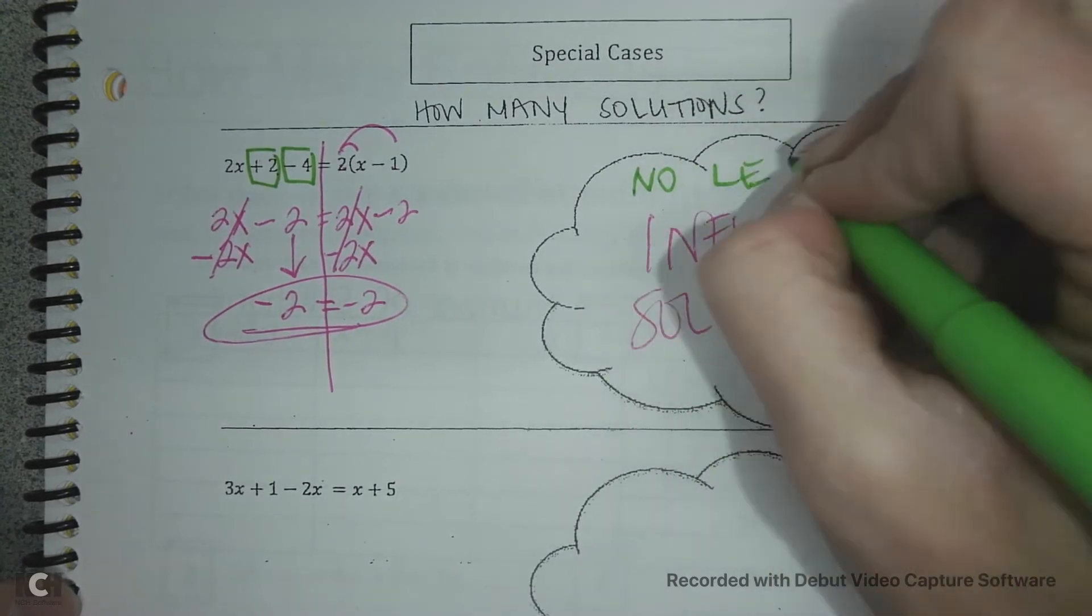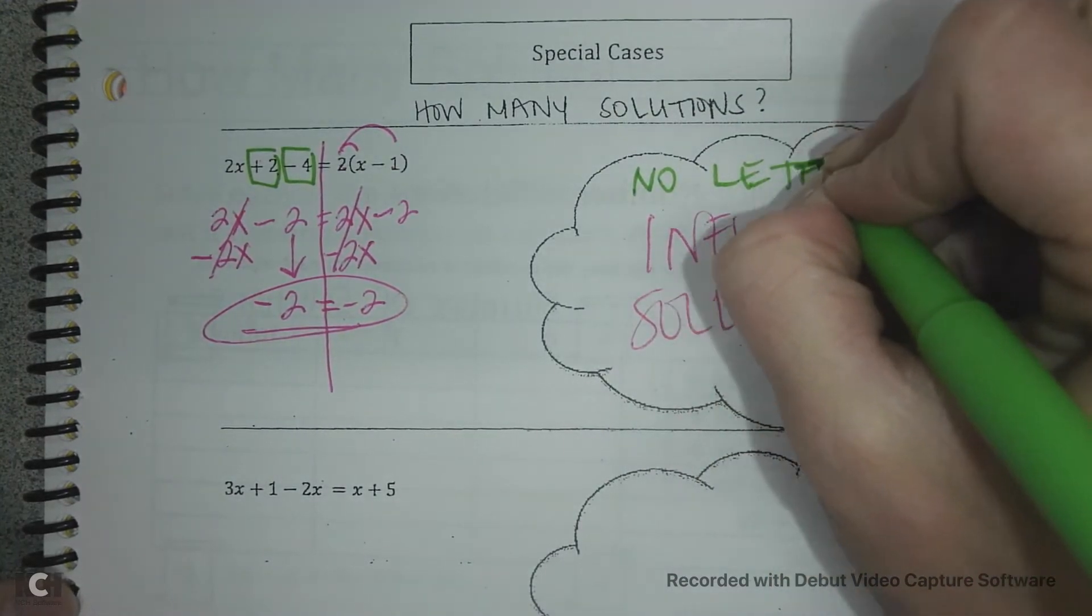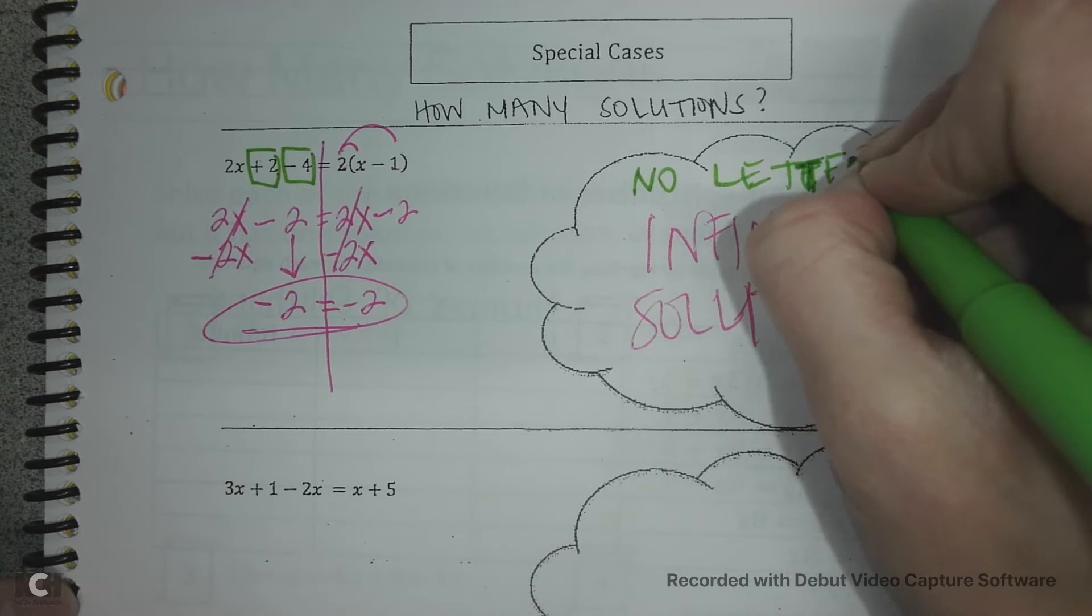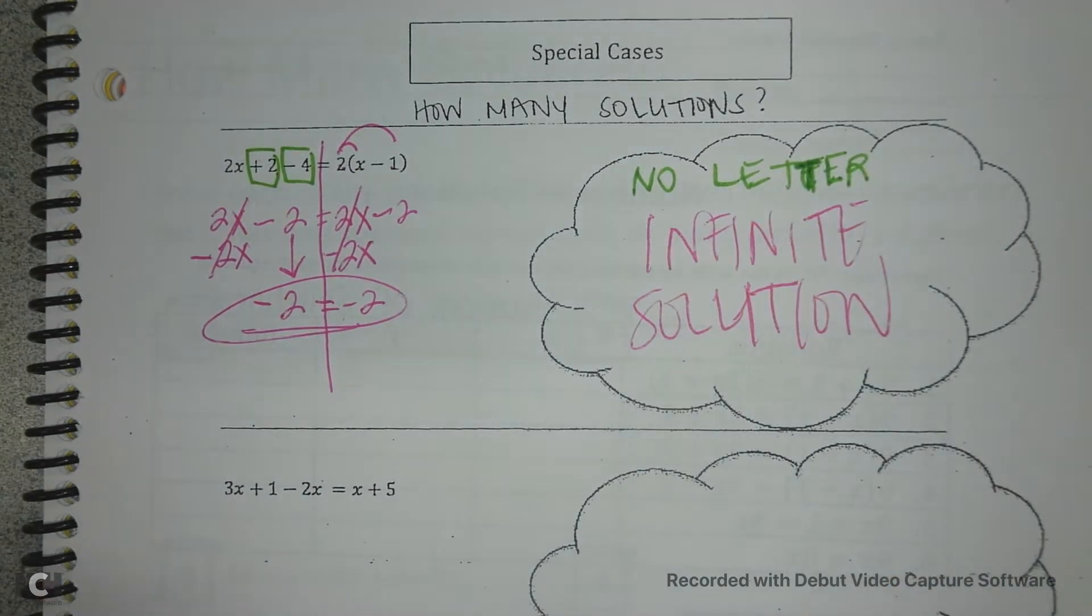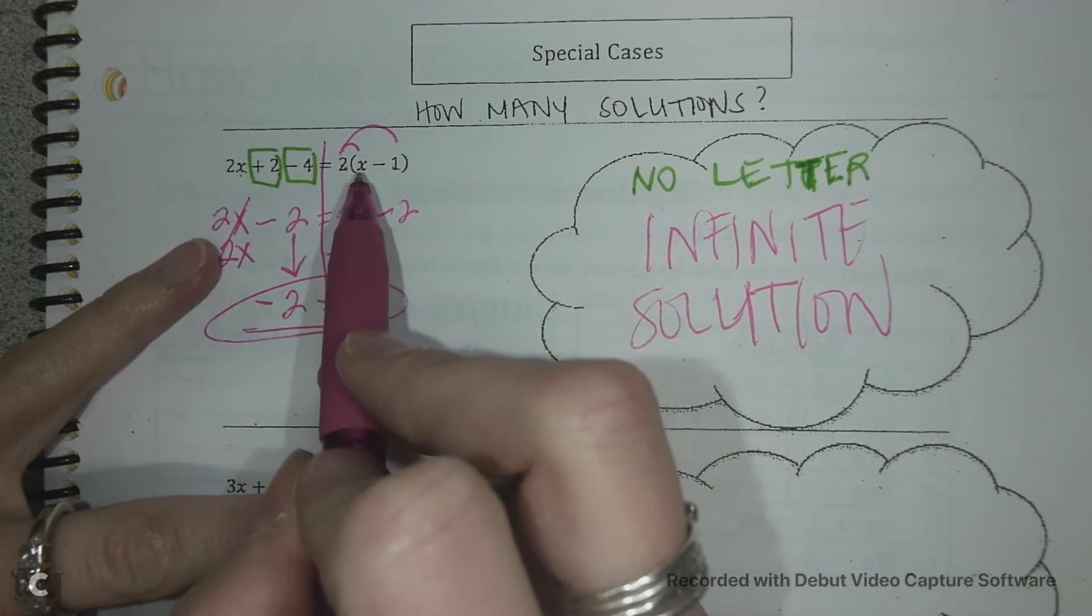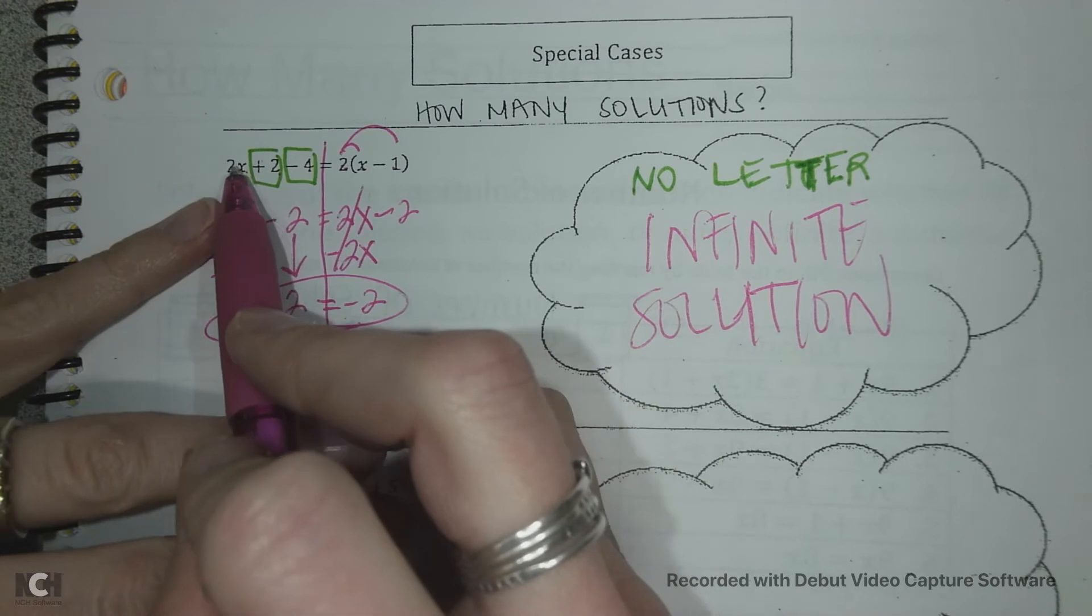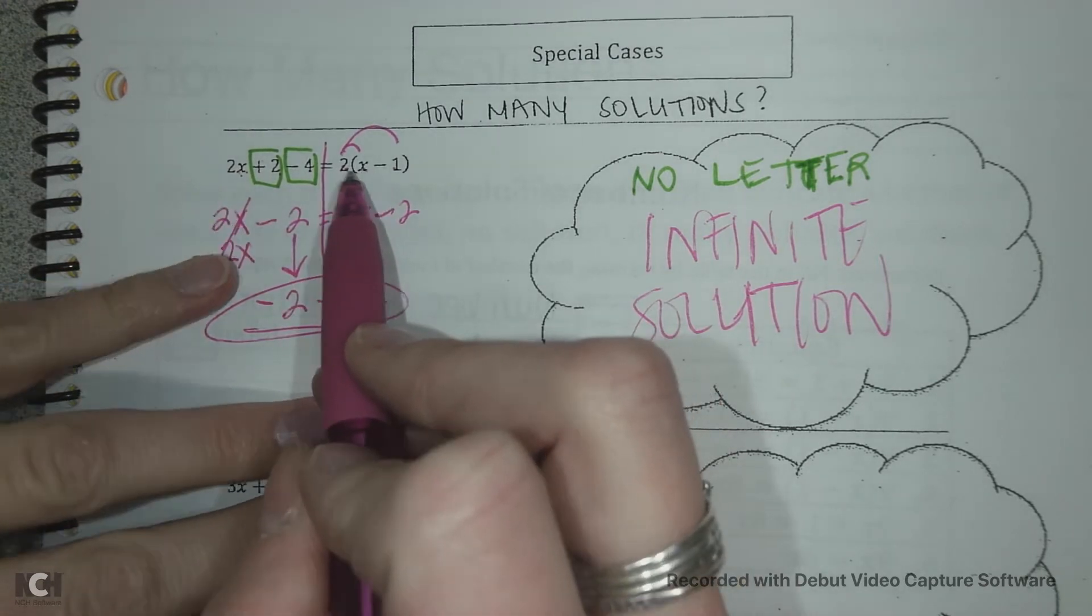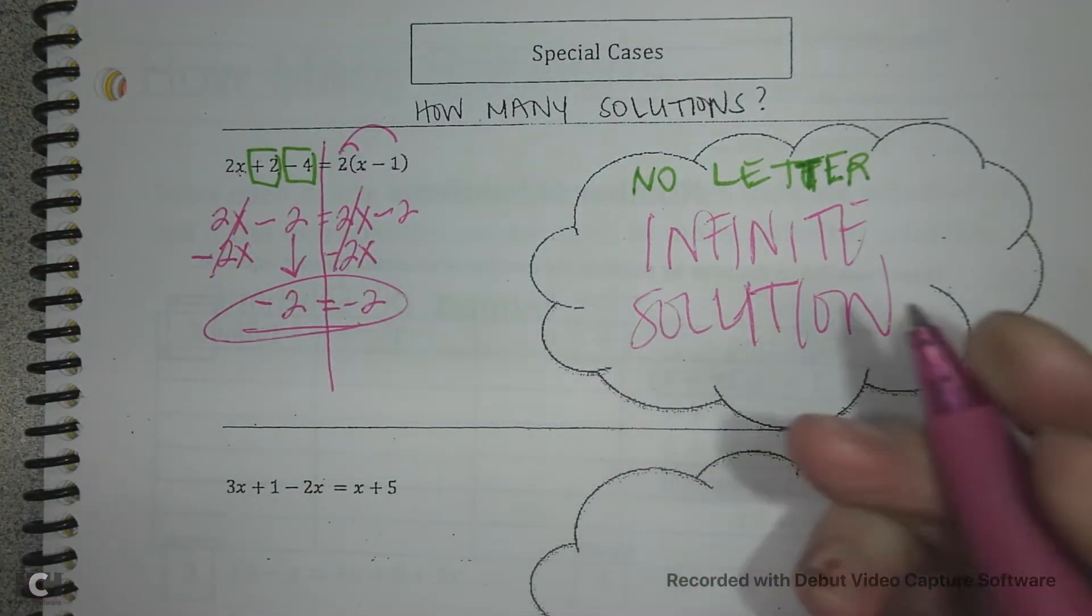So on the left side and the right side are equal 100%. It's an infinite solution and your letter goes away. So this one has no letter. Sorry about my spelling guys. I am struggling. No letter.